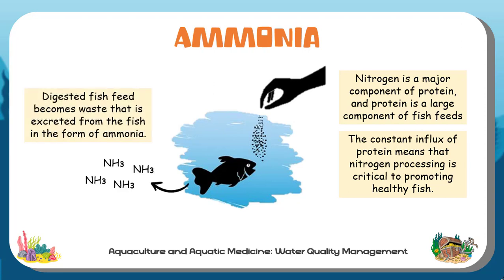Digested fish feed becomes waste that is excreted from the fish in the form of ammonia. Promoting nitrogen cycling through biofiltration rivals dissolved oxygen as the most important factor for fish survival and growth in recirculating aquaculture.